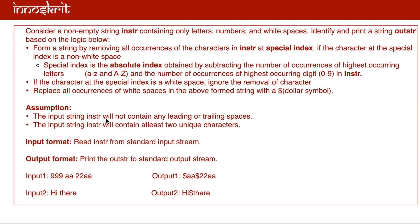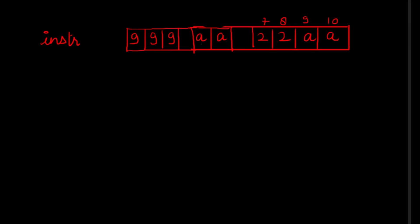This is our first question. I am not reading the complete question — you can pause the video and read the problem statement — but let me brief it. We have to remove all occurrences of the character present at the special index, then insert a dollar sign in place of every white space. If there is a white space at the special index, simply update every white space with a dollar. The special index is calculated by taking the absolute difference of the frequency of the highest occurring letter and the frequency of the highest occurring digit.